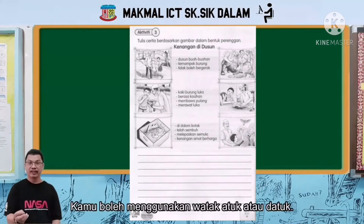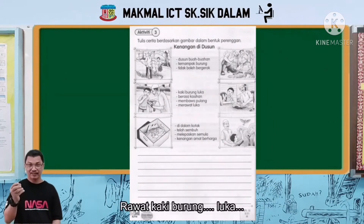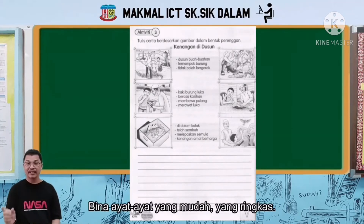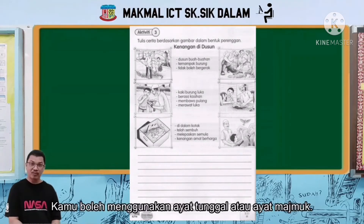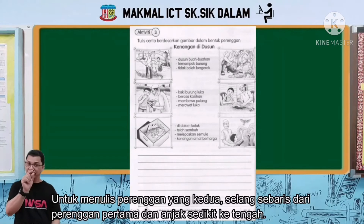Kamu boleh menggunakan watak Atuk. Rawat kaki burung, berasa kasihan. Buat ayat-ayat yang mudah, yang ringkas. Guna ayat tunggal pun boleh, ayat majmuk pun boleh. Untuk perenggan yang kedua, tuliskan selang sebaris daripada perenggan yang pertama dan anjak sedikit ke tengah.